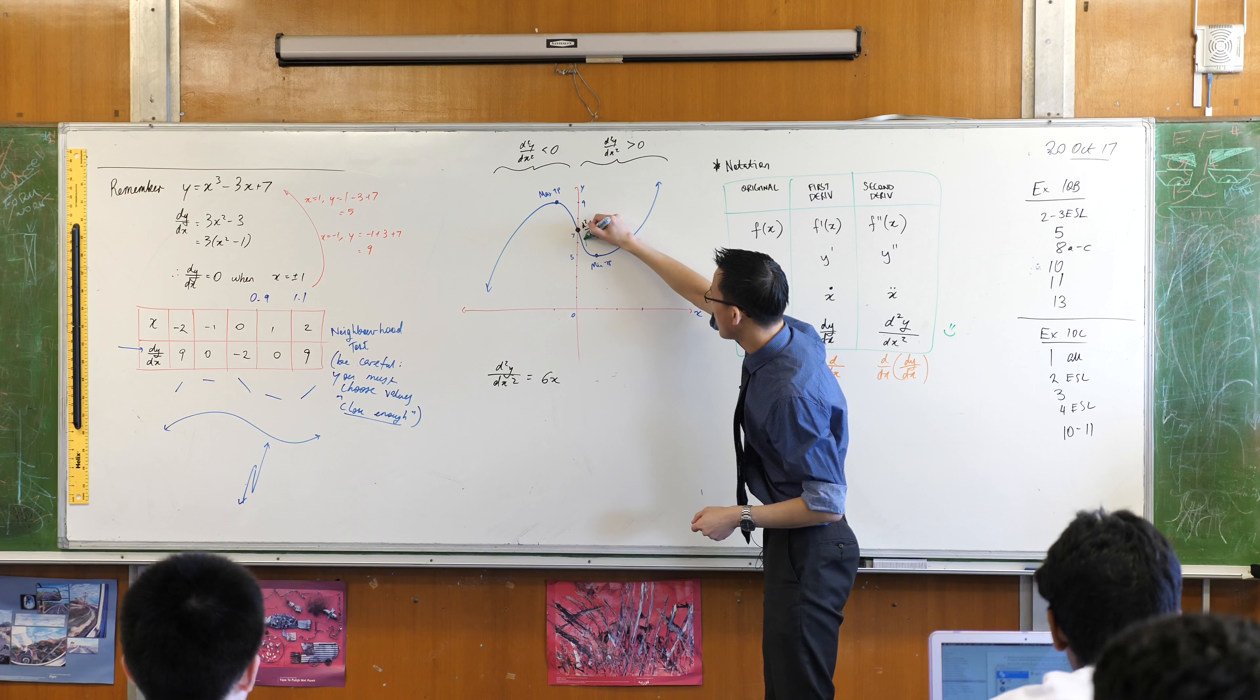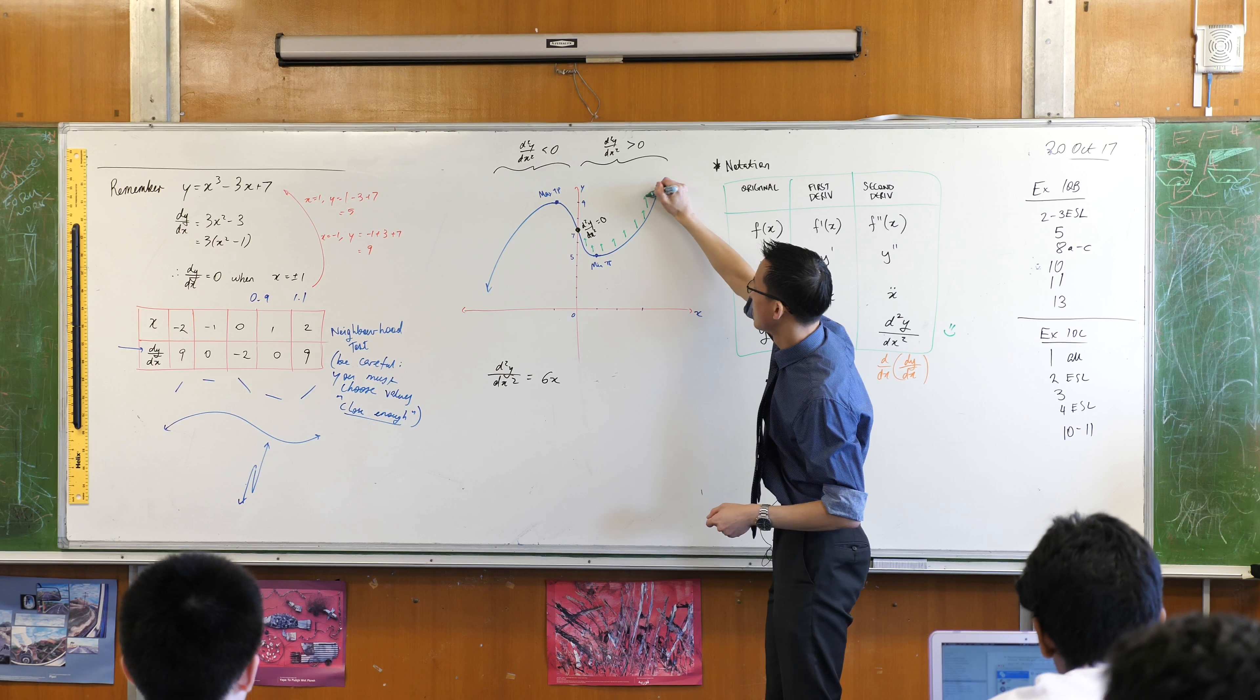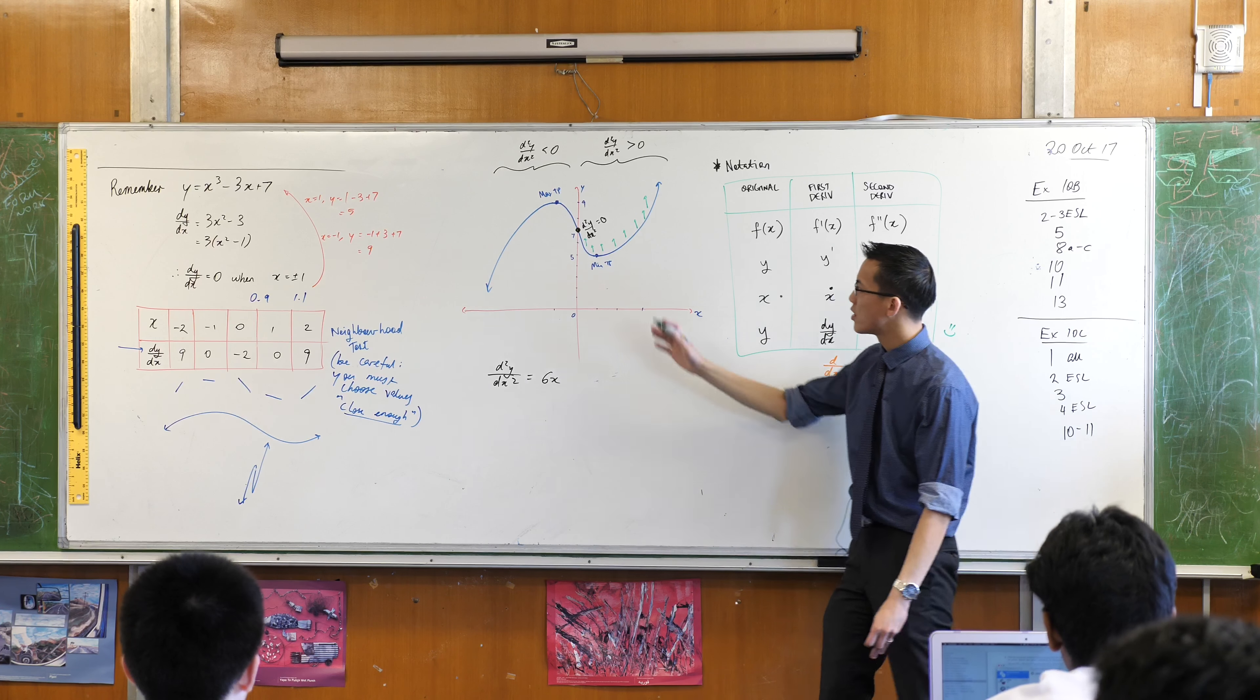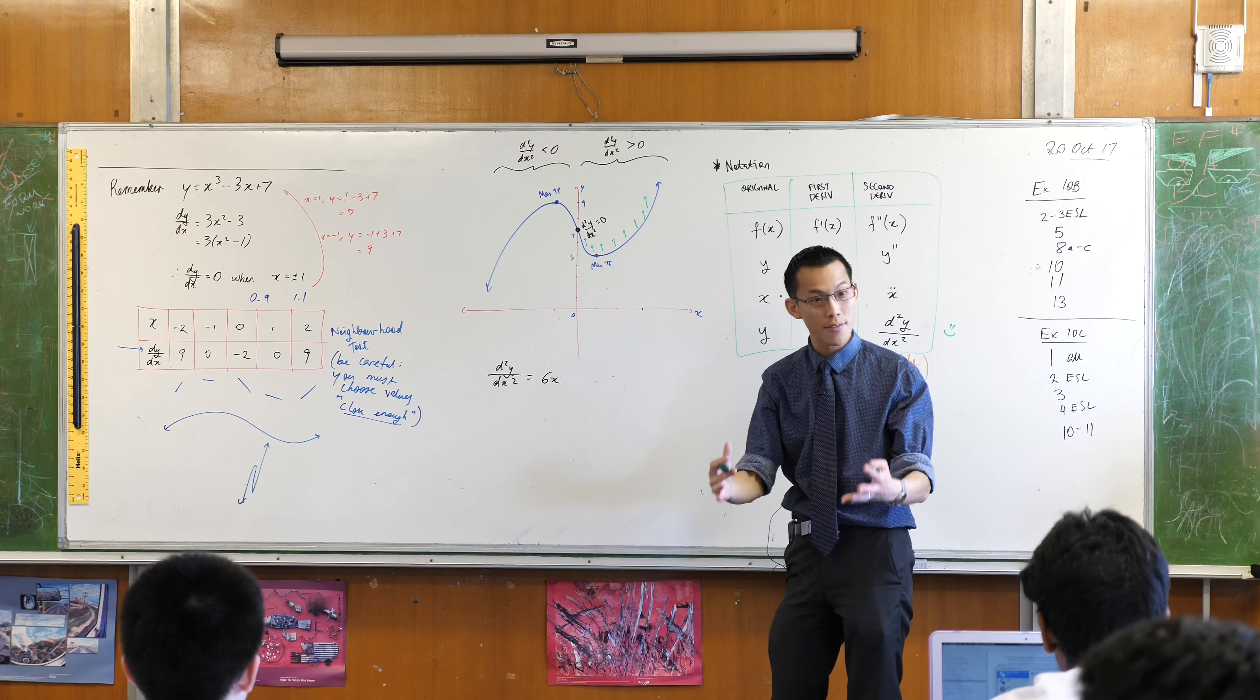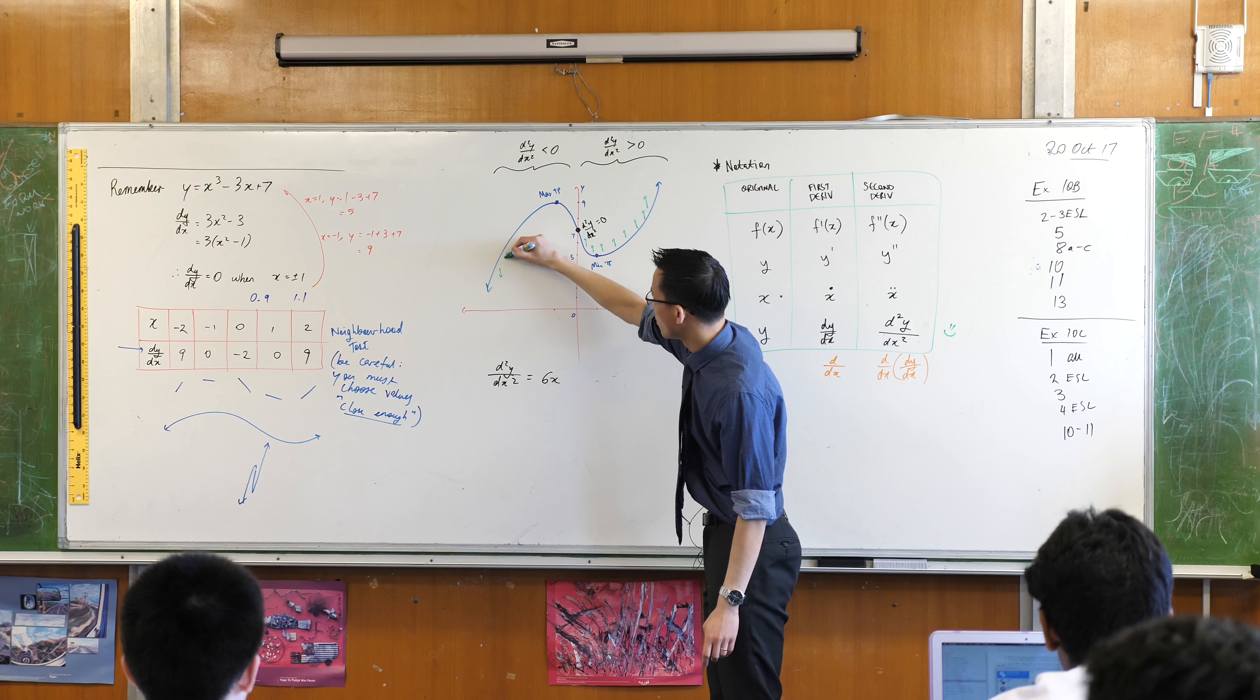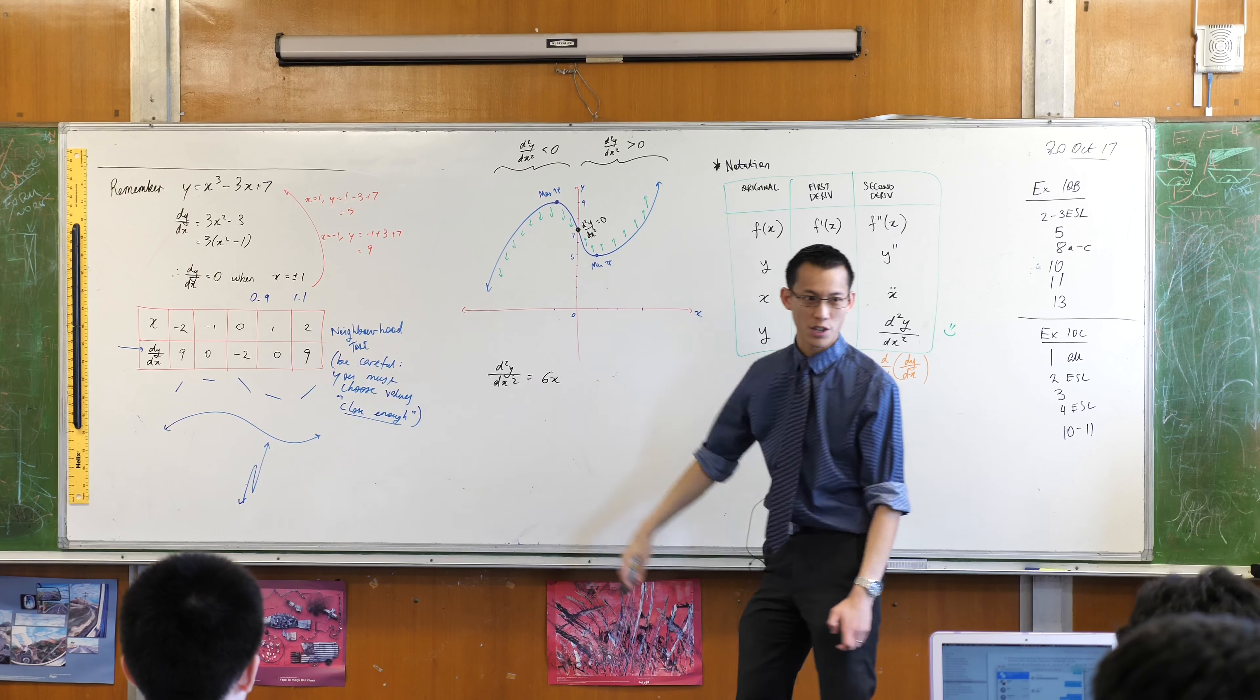Right? Every part here is facing upwards, like that, right? Whereas on the other side, this part of the graph, if you have a look at the curvature of it, it's facing downwards, like so.